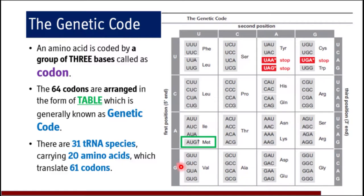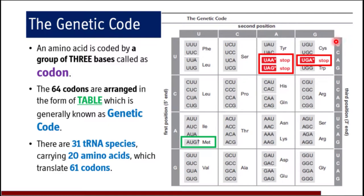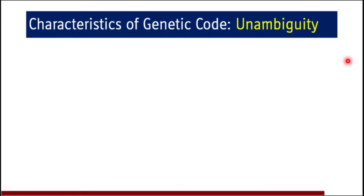The codon AUG codes for methionine and is the start codon for protein biosynthesis in humans. The three codons UAA, UAG and UGA are known as stop codons, termination codons, or nonsense codons. Amongst the 64 possible codons, one is the start codon and three are stop codons, so actually only 61 codons are coding for amino acids.